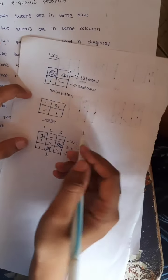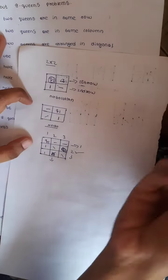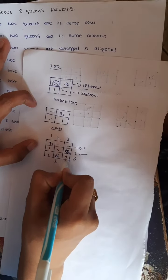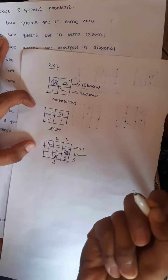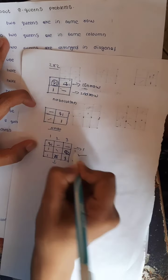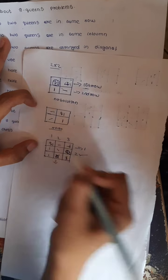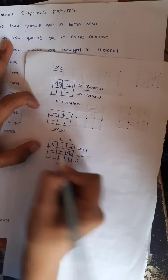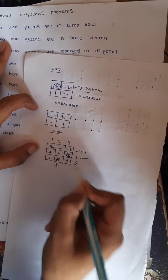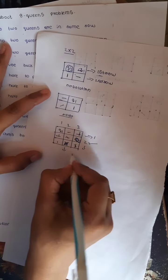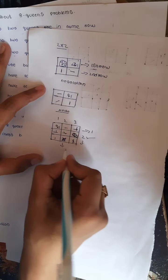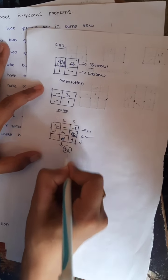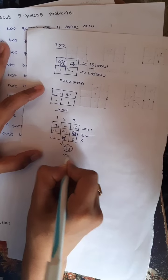Now applying the 3 rules again: this box cannot place Queen 3, this box also cannot place Queen 3, and these 2 boxes also. So we are not getting any place to put Queen 3. There is no solution.